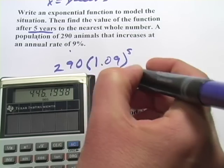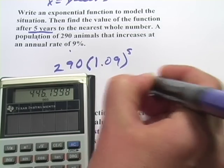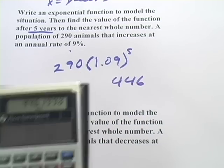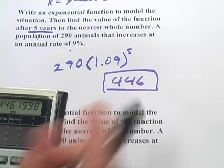Let's just call it 446. So the number of animals after 5 years is 446 animals.